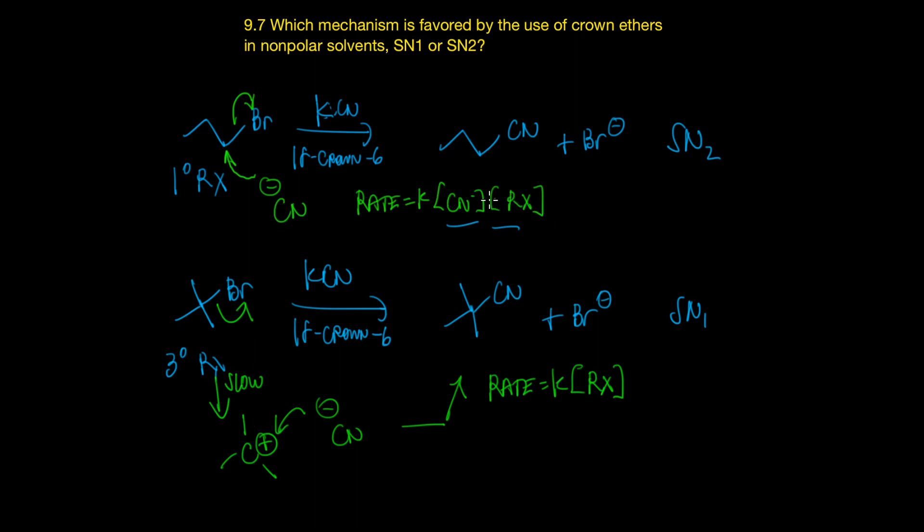Whereas over here, we have the rate is proportional to the nucleophilicity or how good your nucleophile is. So, the better the nucleophile, the faster this reaction is going to occur. Crown ethers make the nucleophiles even better. So the answer is SN2 because cyanide is involved in the rate-limiting step. So it's going to make the overall reaction faster if the nucleophile is even better.